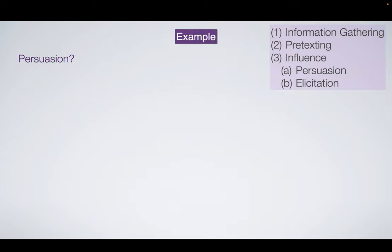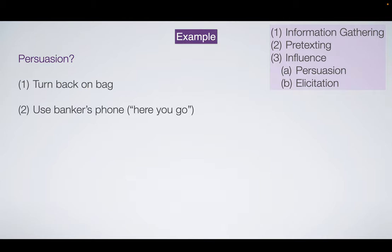But there are also smaller aspects of persuasion and elicitation beyond just getting the PIN number. I noticed two. One was getting the victim to turn their back on the bag — with the distraction of the tourists asking for a picture. The other big one is that this whole attack worked because the victim used the social engineer's phone. If the victim had pulled out their own phone, the attack might still work, but it would be harder.